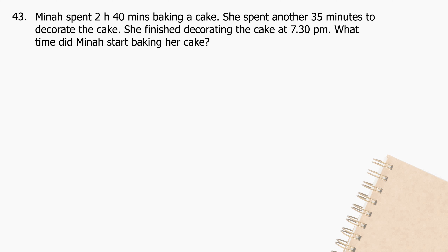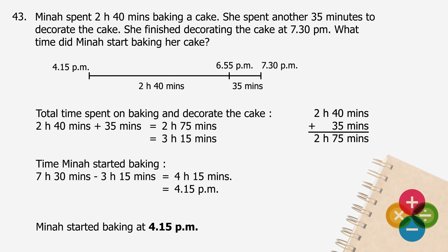Question 43: Mina spent 2 hours 40 minutes baking a cake. She spent another 35 minutes to decorate the cake. She finished decorating the cake at 7:30 pm. What time did Mina start baking her cake? The total time spent on baking and decorating will be 2 hours 40 minutes plus 35 minutes equals 2 hours 75 minutes, which equals 3 hours 15 minutes. The time Mina started baking will be 7:30 pm minus 3 hours 15 minutes, and the difference is 4:15 pm. Mina started baking at 4:15 pm.